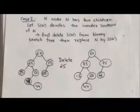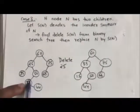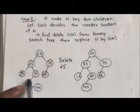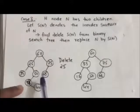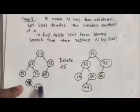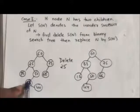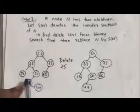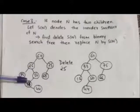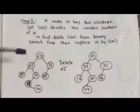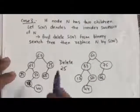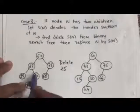First, we delete the node with value 33. To delete this node, note that it has only one child, so node 33 is deleted by replacing it with its only child, which is the node with value 44. After deleting node 33, we then replace the node with value 25 by the node with value 33. In this way, node 25 is deleted from the binary search tree.